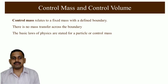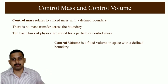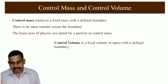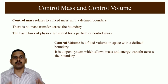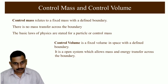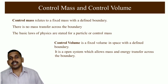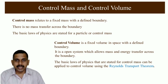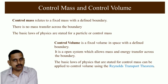The basic laws of physics are stated for a particle or for a control mass. In contrast, a control volume is a fixed volume in space with a defined boundary. We are not worried about how much mass is there or whether mass is coming in or going out — it is simply a fixed volume in space with respect to some coordinate system. The laws of physics defined for the control mass have to be re-expressed for the control volume using the Reynolds transport theorem.